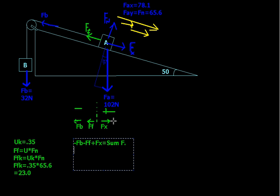Okay, so then what do we do? Well, let's just plug in the values that we have. For our force of the block, that's just 32 newtons — but that's negative 32 newtons, right? Because it's pulling downwards, it's pulling backwards. Negative 32 newtons.